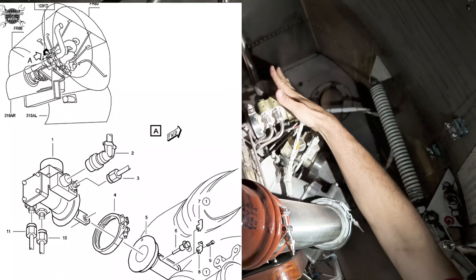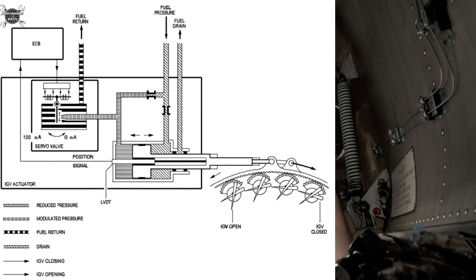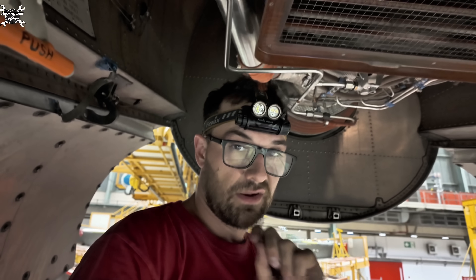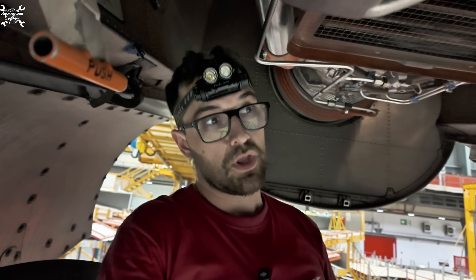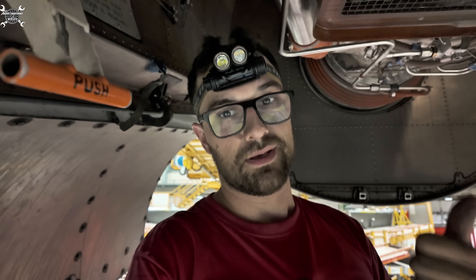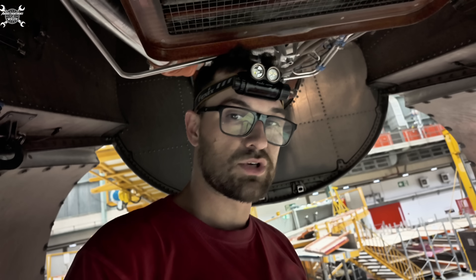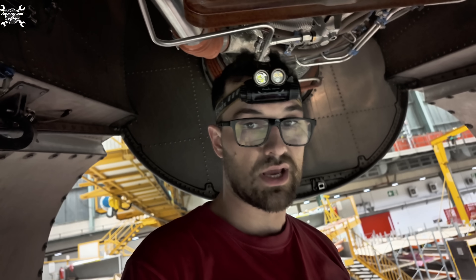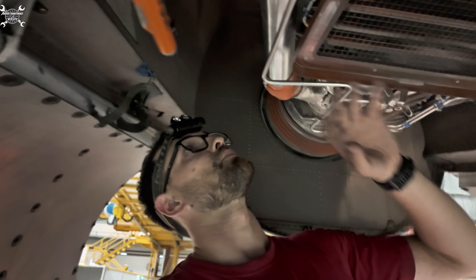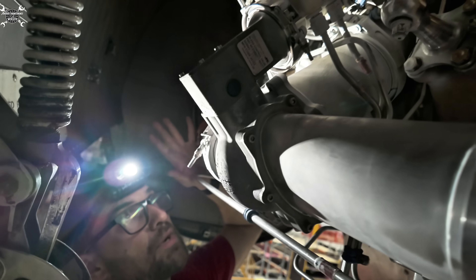The IGV valve controls the inlet guide vanes, which you can find on the load compressor. Both of these valves are responsible for providing air to the airplane — which means we need bleed air for the startup of the engines, and we also use this air for the air conditioning system, which helps to pressurize the airplane and provide fresh air inside the cabin. Those two valves are controlled thanks to fuel pressure coming from the fuel control unit.